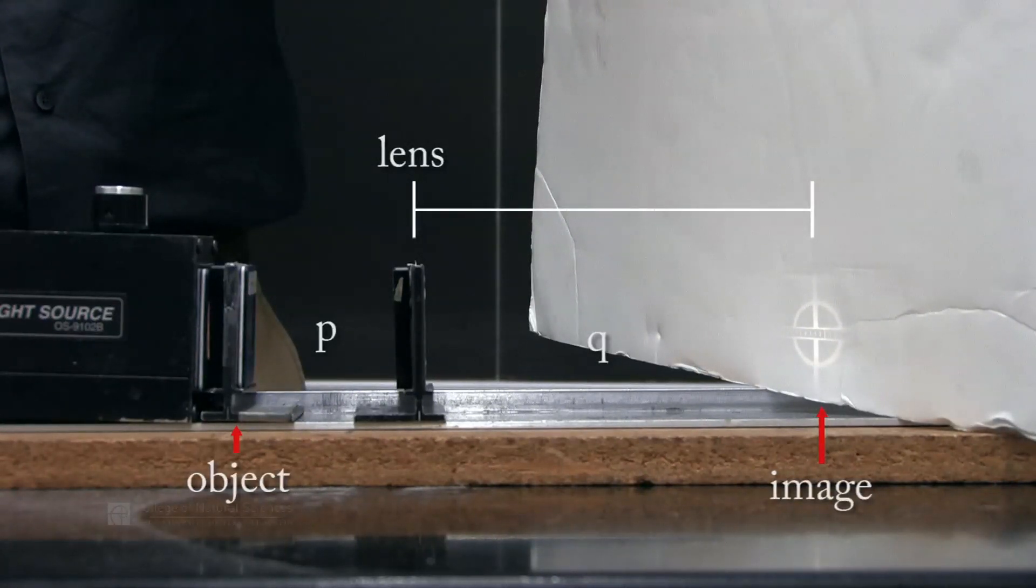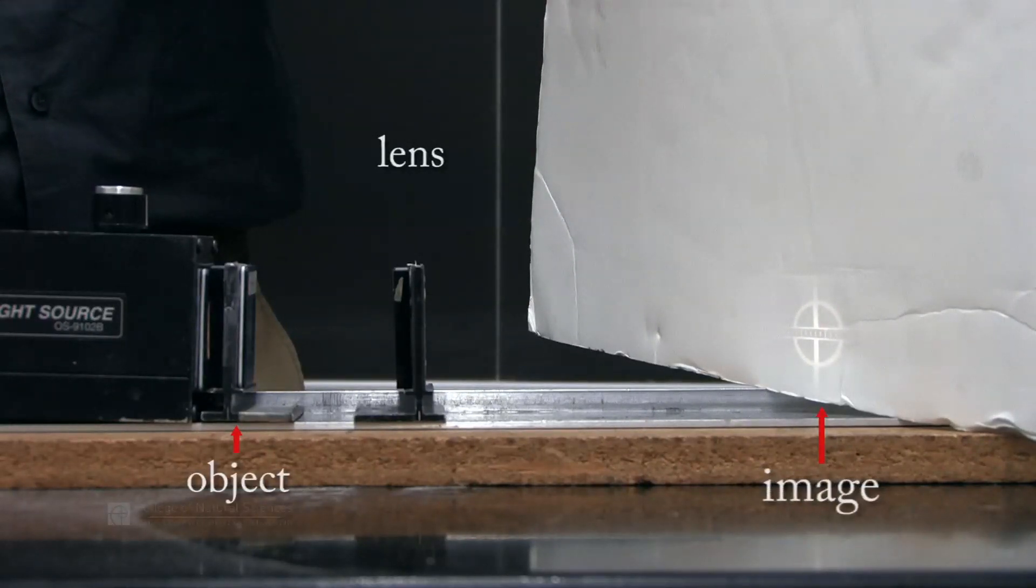The other questions we want to ask are: does the image become larger or smaller than what the object started at, and does the image invert itself or does it stay the same way?